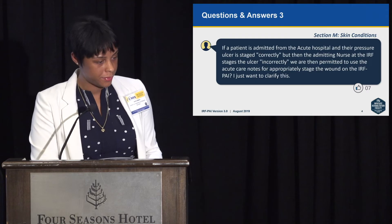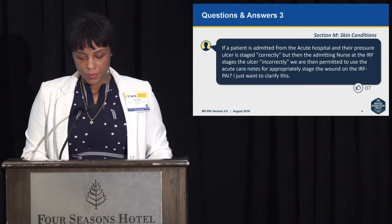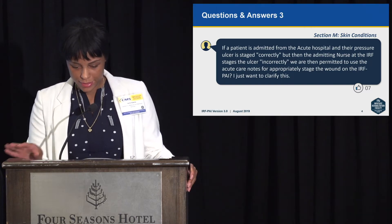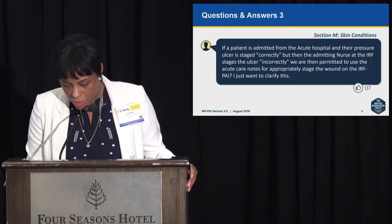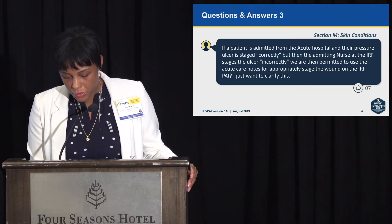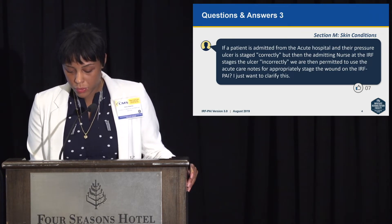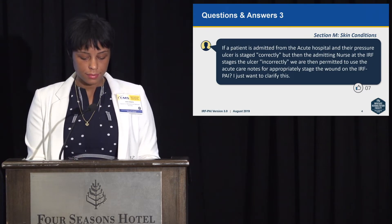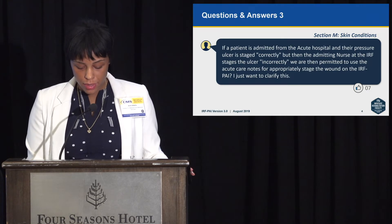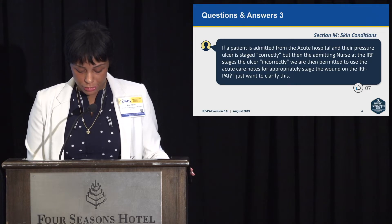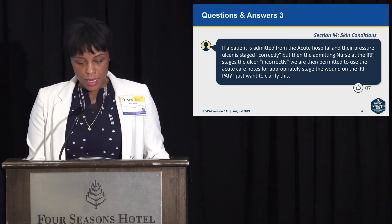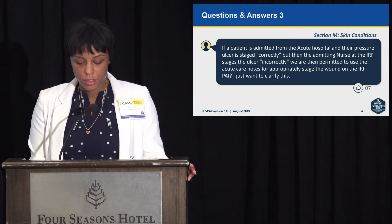Question number 3: if a patient is admitted from the acute hospital and the pressure ulcer is staged correctly, and then the admitting nurse at the IRF stages the ulcer incorrectly, are we permitted to use the acute care notes for appropriate staging of the wound on the IRF-PAI? The answer is: if documentation shows a pressure ulcer staged from the acute care hospital and the IRF nurse staged the wound at a lesser stage due to healing, you would choose the documented stage from the acute care hospital. If the nurse coded the pressure ulcer at an increased stage, correct the code to the observed stage.